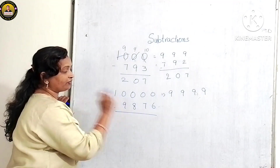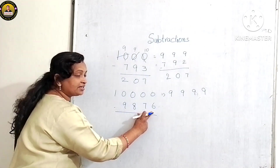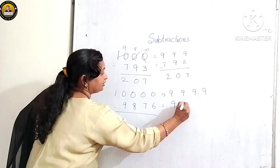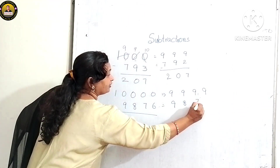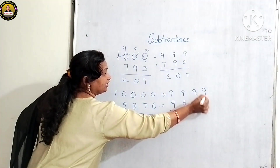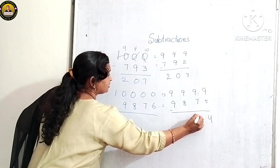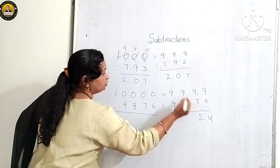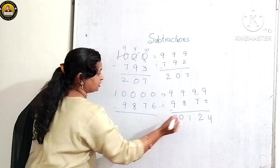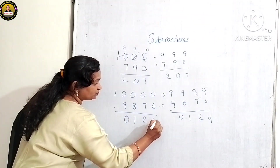The predecessor of 9,876 is 9,875. Now subtract easily: 9 minus 5 is 4, 9 minus 7 is 2, 9 minus 8 is 1, 9 minus 9 is 0. So the final answer is 0124, that is 124.